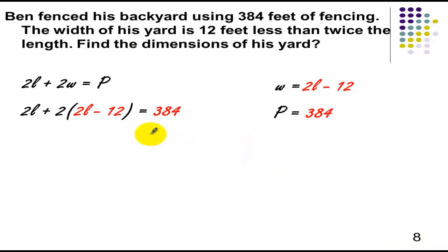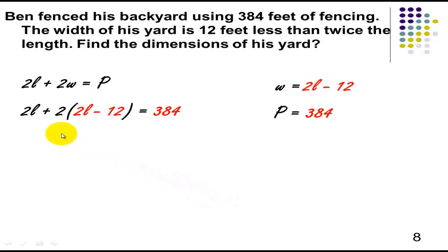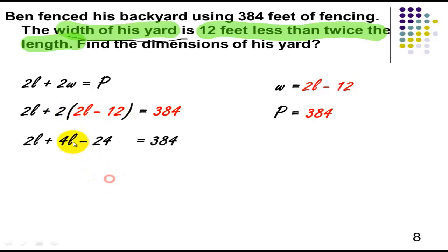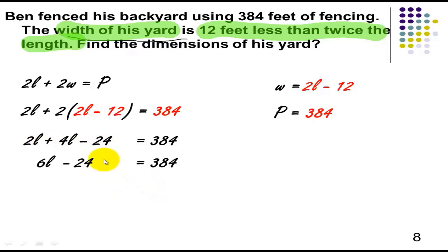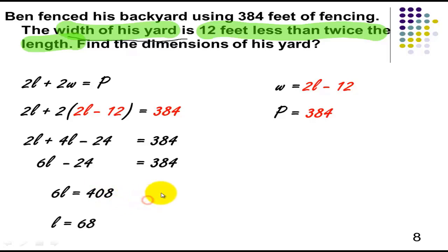Now, if the question is to find the dimensions of his yard, we have to proceed and solve for the width and the length. To proceed, distribute the 2 to the quantity (2L minus 12). You get 4L minus 24. Combining like terms, 2L plus 4L is equal to 6L. Bring down minus 24 equals 384. Add 24 to both sides — you will get 408.